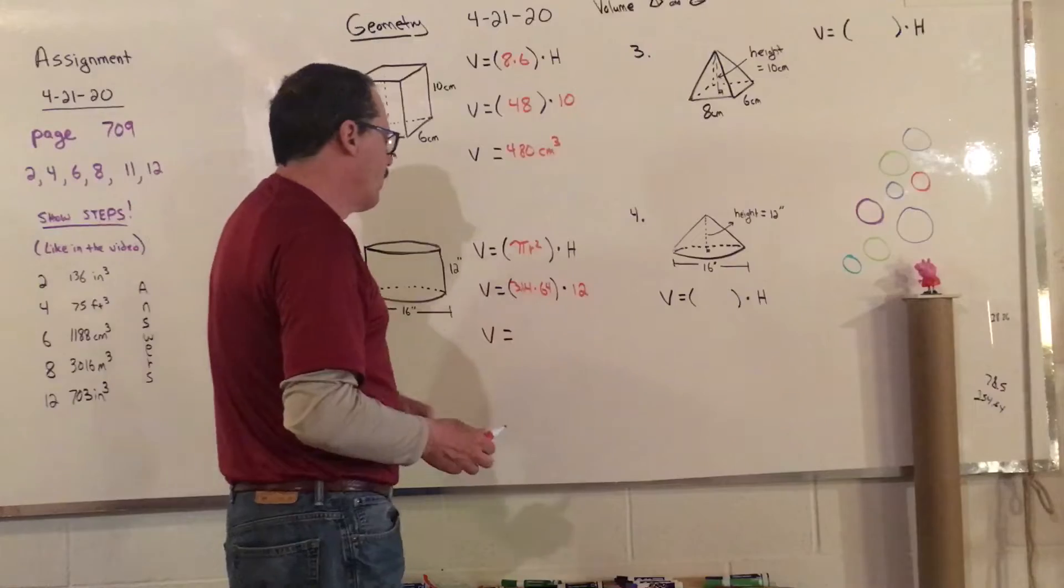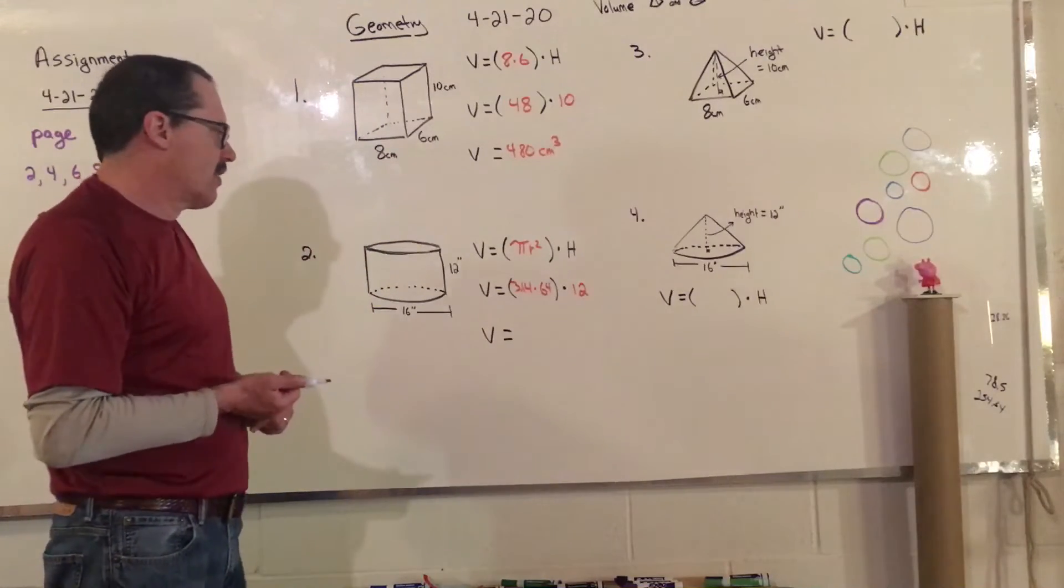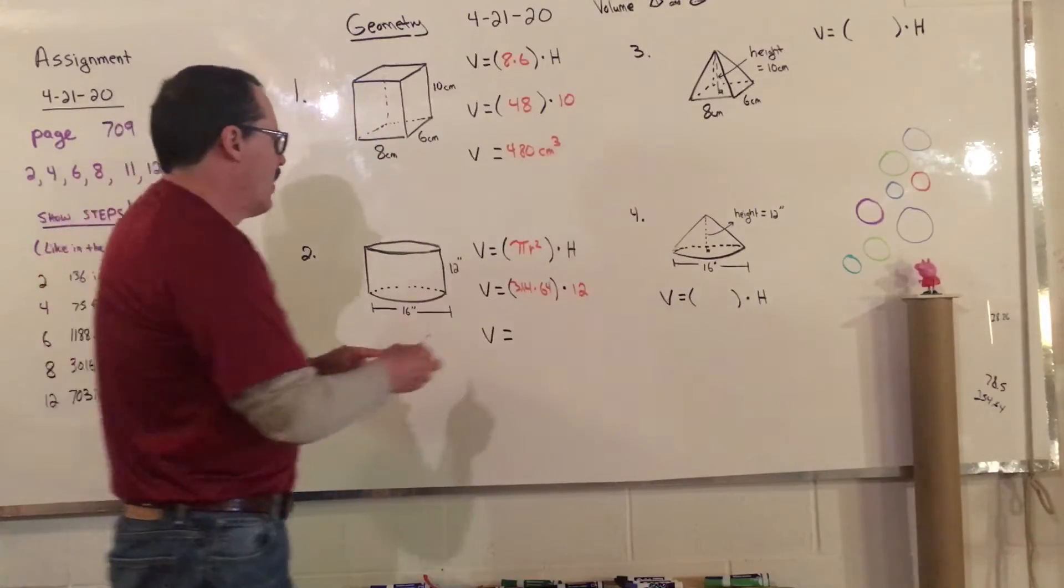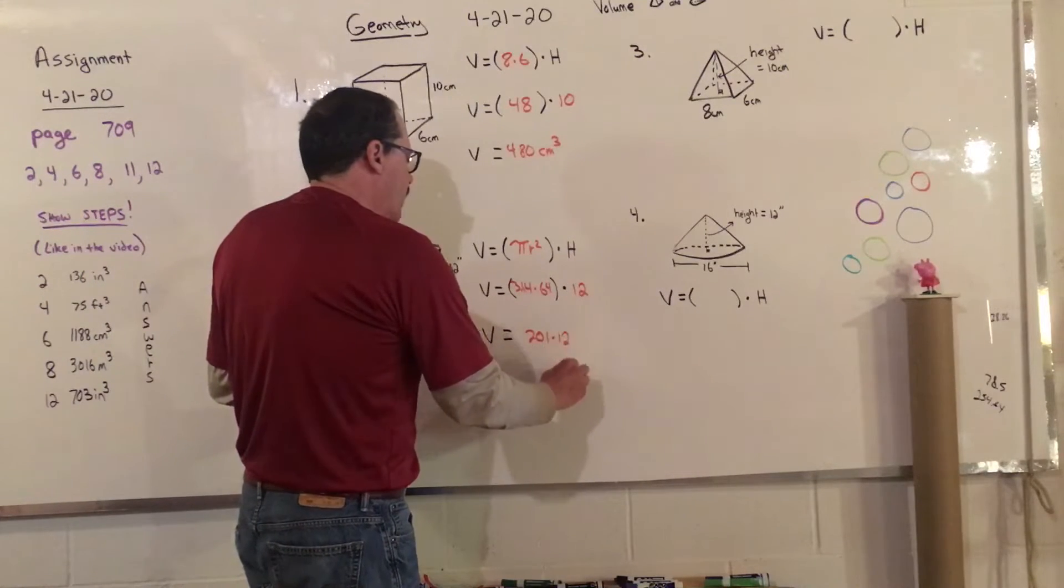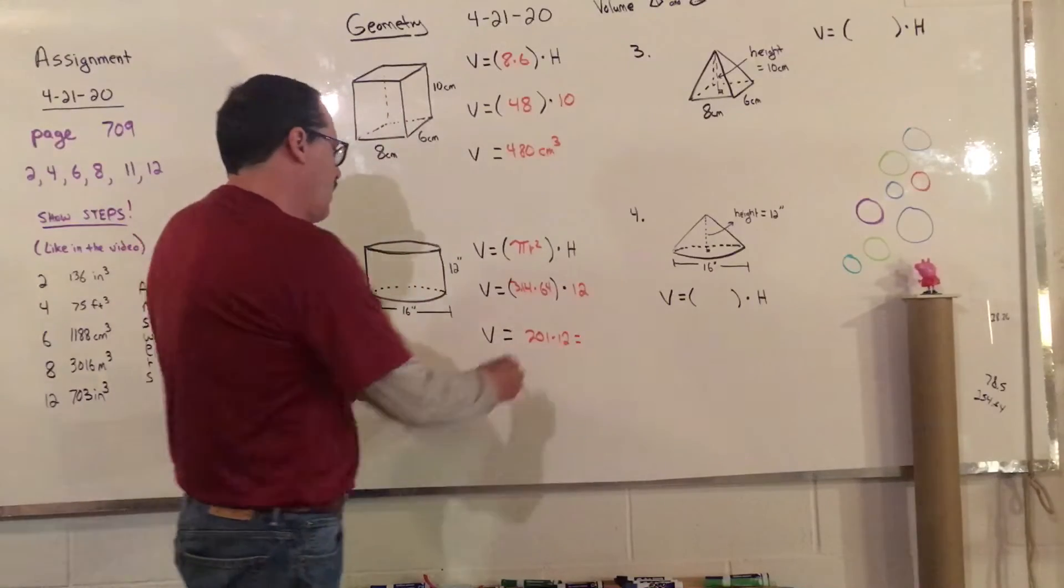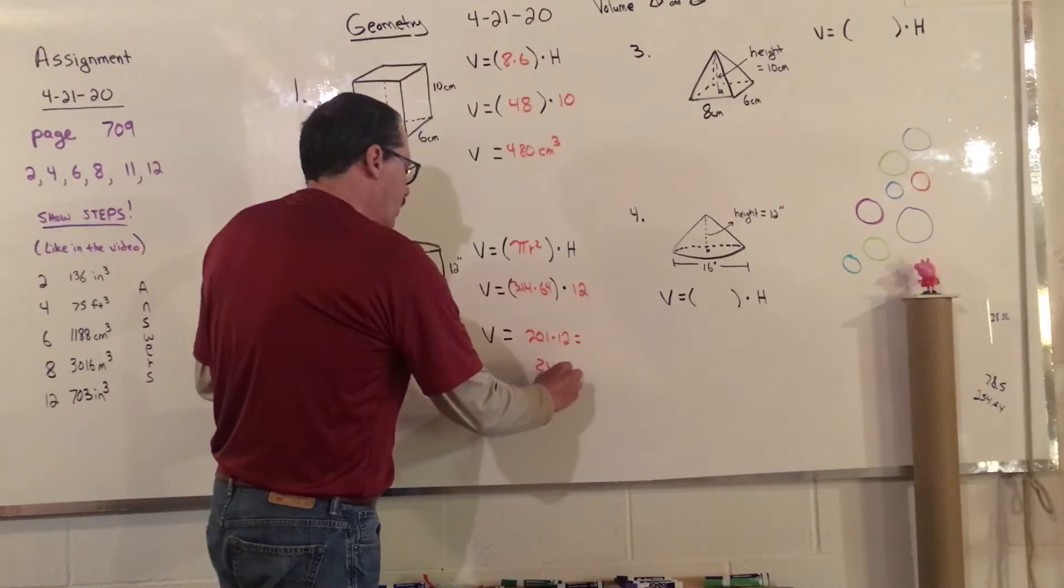So 3.14 times 64. I did not do this ahead of time, but it'd be around 201, I think. And then you'd multiply that by 12, and then you would get the answer to that, which would be around, oh, I don't know, 24, 13, something like that.